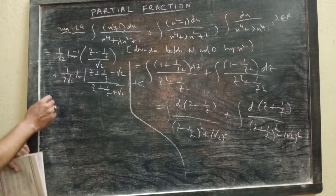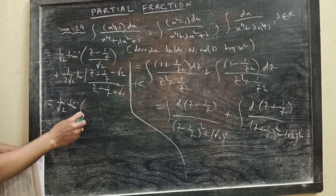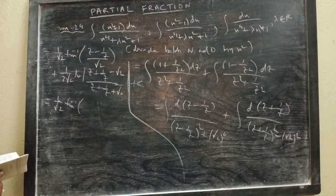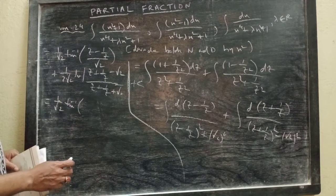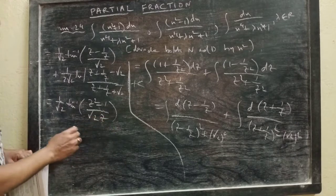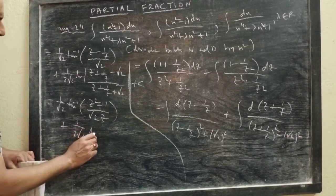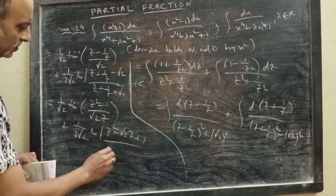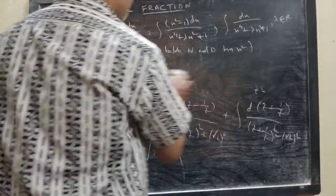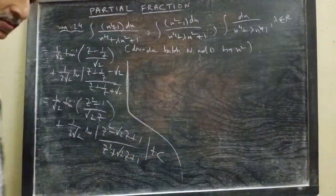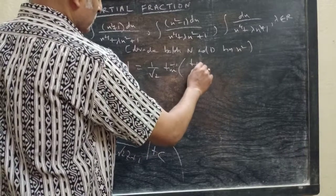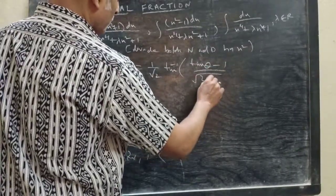Now we have to substitute z back. z was defined by tan θ = z², so z = √(tan θ). So we write: (1/√2) tan⁻¹((z² − 1)/(√2 · z)) plus (1/(2√2)) ln|(z² − √2·z + 1)/(z² + √2·z + 1)| + C. Now substituting z = √(tan θ): (1/√2) tan⁻¹((tan θ − 1)/(√2 · √(tan θ))) plus (1/(2√2)) ln|(tan θ − √2·√(tan θ) + 1)/(tan θ + √2·√(tan θ) + 1)| + C.